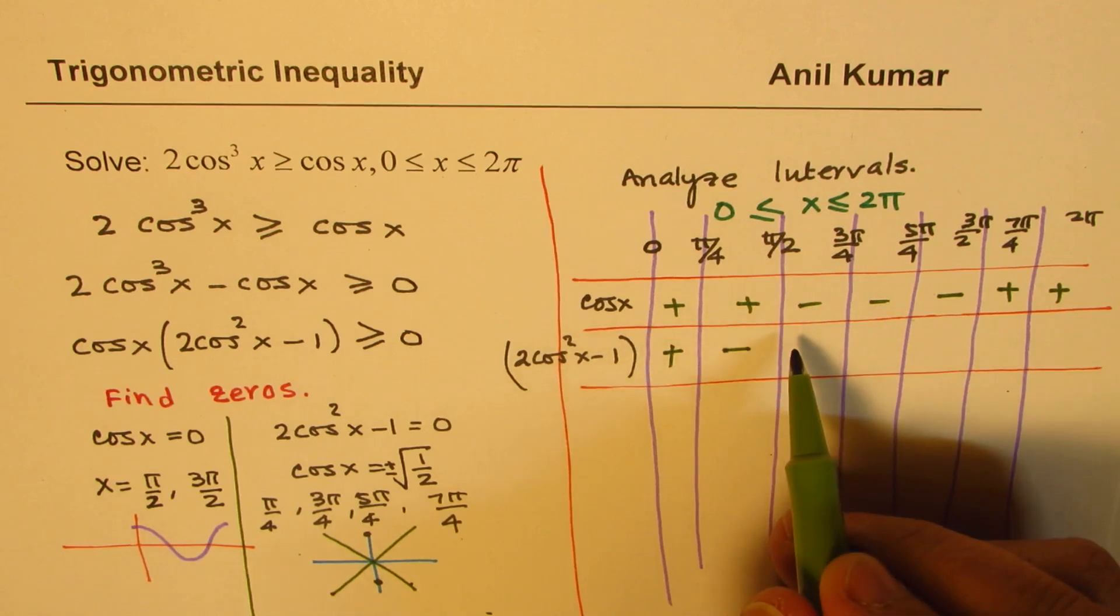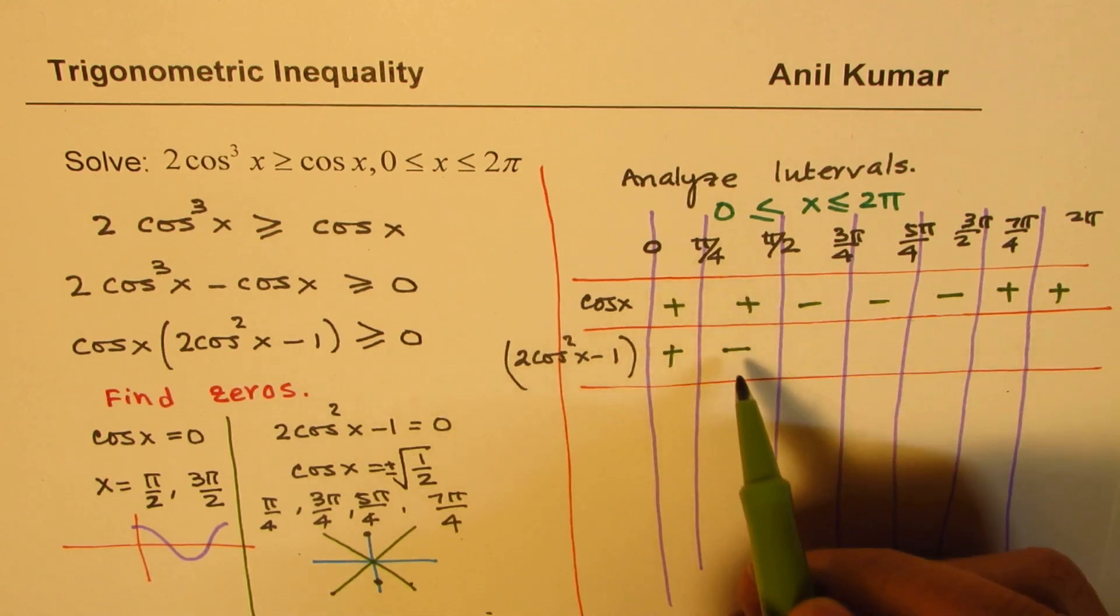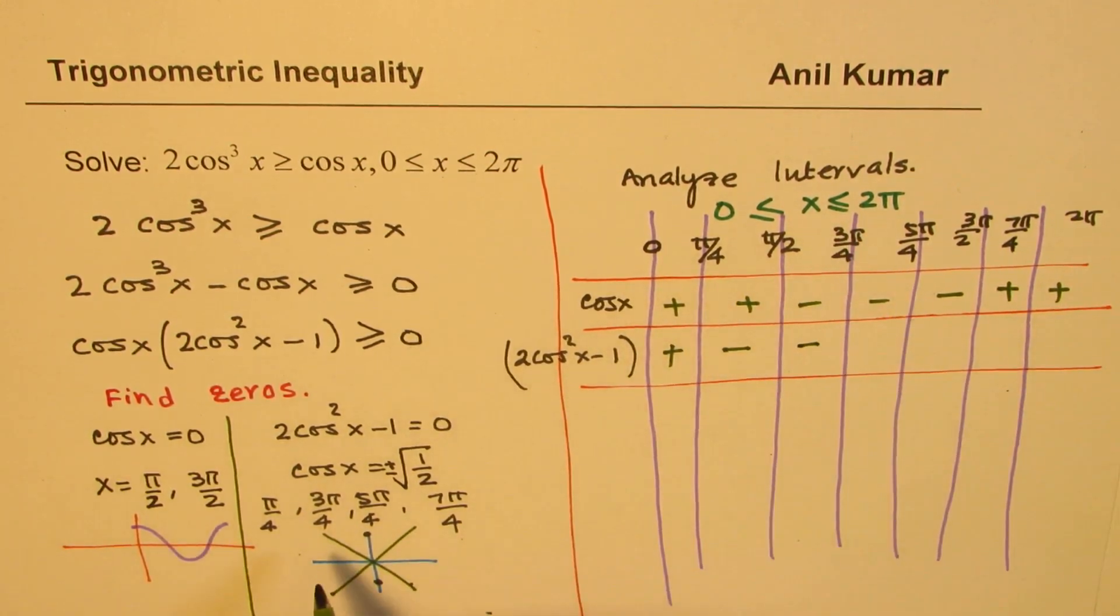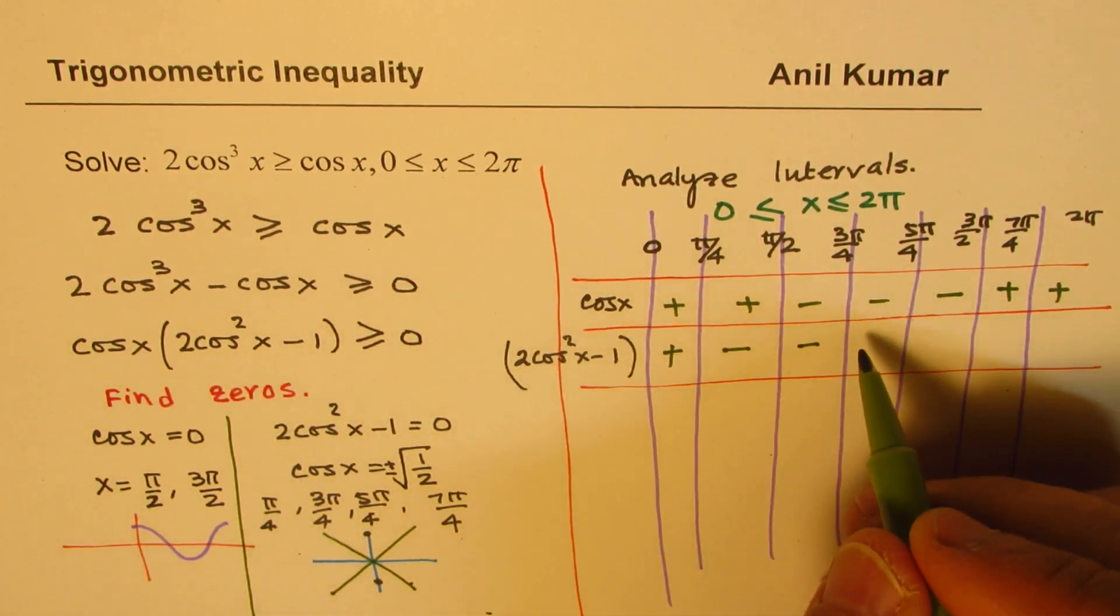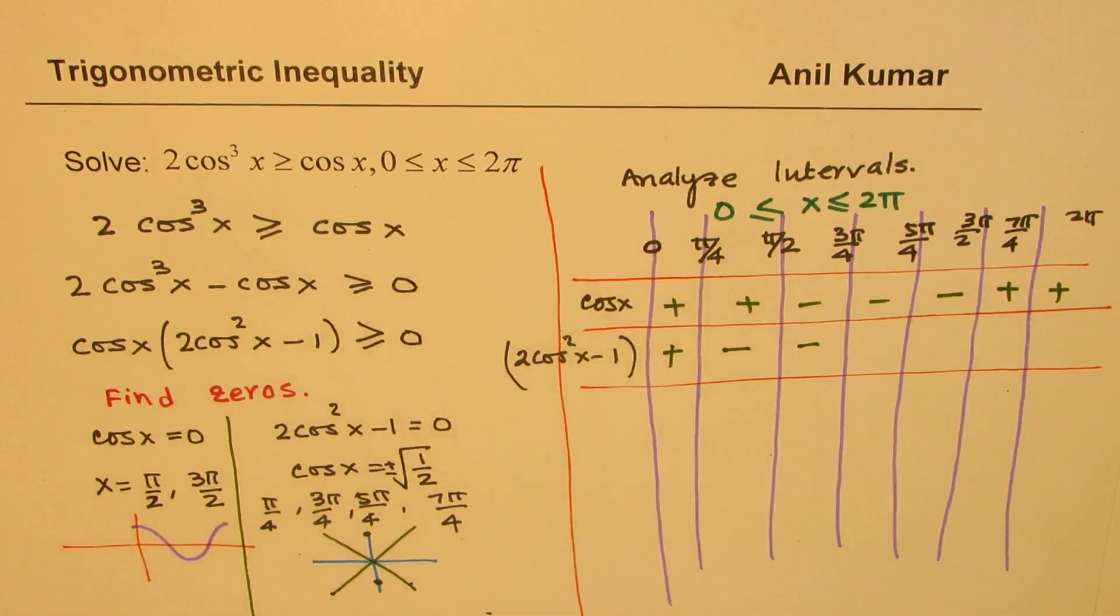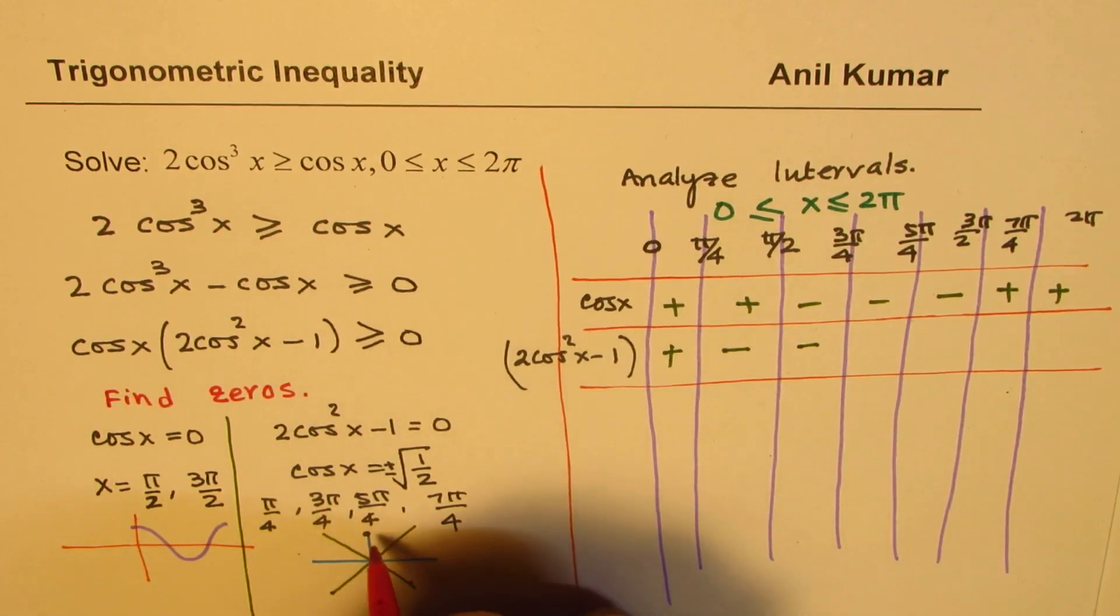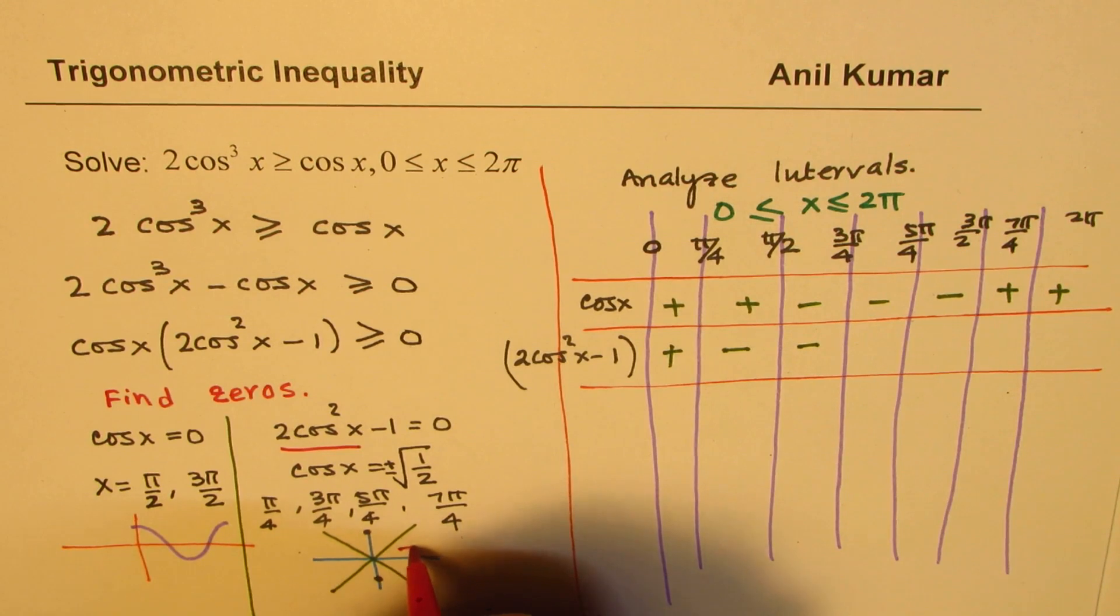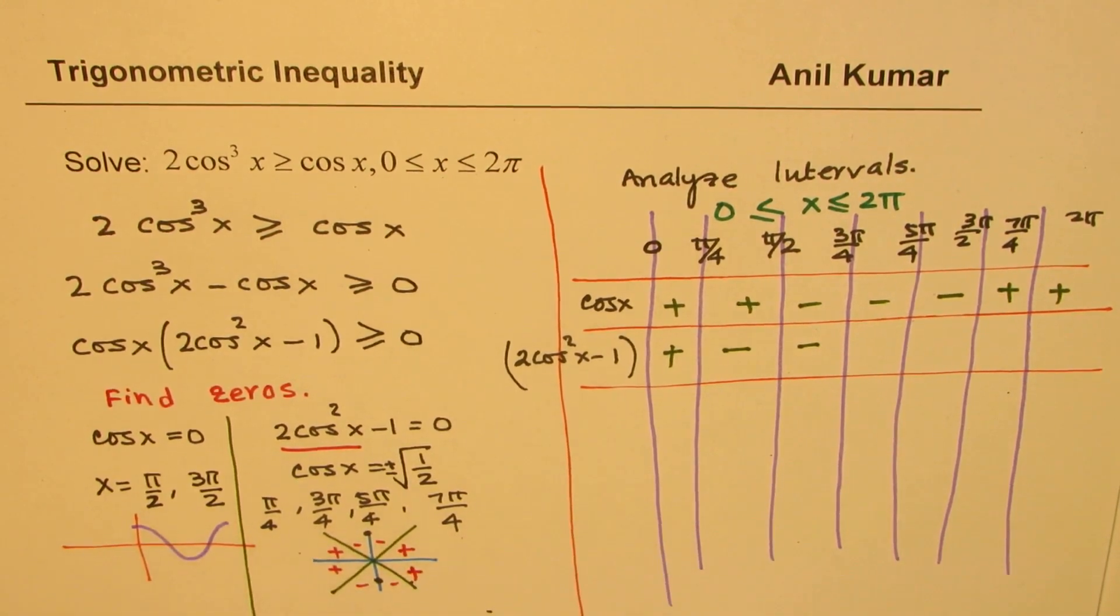At π/4, it becomes 0 and changes sign. After π/2, it remains as negative. After 3π/4, it again changes sign. For 2cos², it is positive here, then changes sign. This is negative here, and changes sign becomes positive, negative, negative, and then positive. Do you see that part?